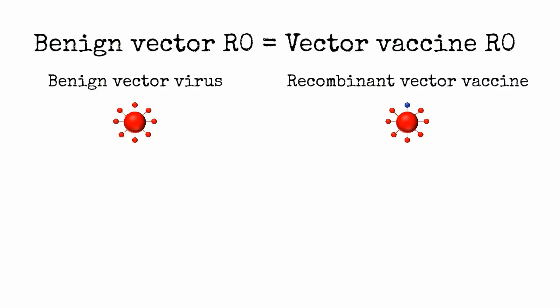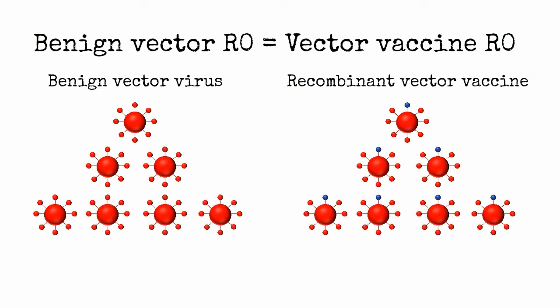In contrast, recombinant vector vaccines may often transmit well simply because they have a fully intact genome of a virus, the vector. The vector is chosen to be benign, but it will likely be transmissible, just like its wild type counterpart. It could even be chosen to be more transmissible than the disease.